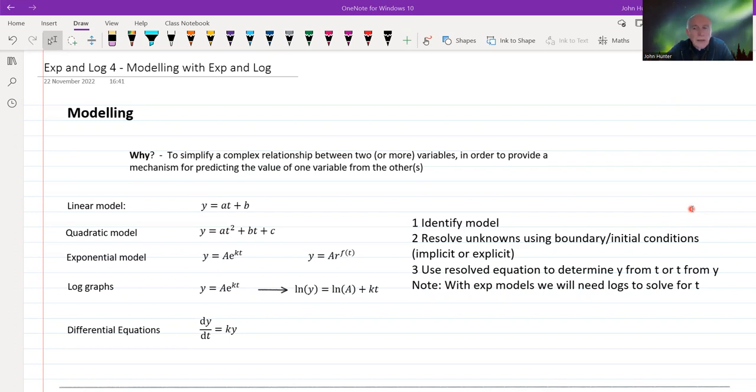Just a bit about modeling in general to set this in context. Why do we do this? If we've got a relationship between two variables that we're interested in, then the model is a simplified form of that relationship. There may be all sorts of parameters involved if we're looking at the relationship between two variables. What we're trying to do is simplify it right down to give us an equation, a relationship that we can use for predictive purposes. It's a model, so it's not necessarily going to give us totally accurate predictions, but it's going to give us predictions that we can use. So that's basically the idea: to simplify a complex relationship to provide a mechanism for predicting.